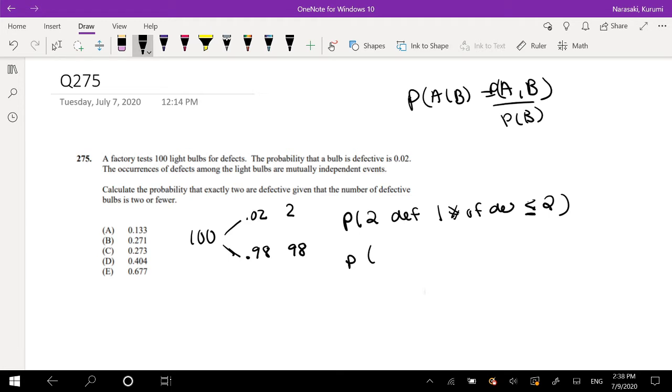So using that, we're looking for the probability that it's exactly 2 defective and the defective is less than or equal to 2, over the probability that it's less than or equal to 2.